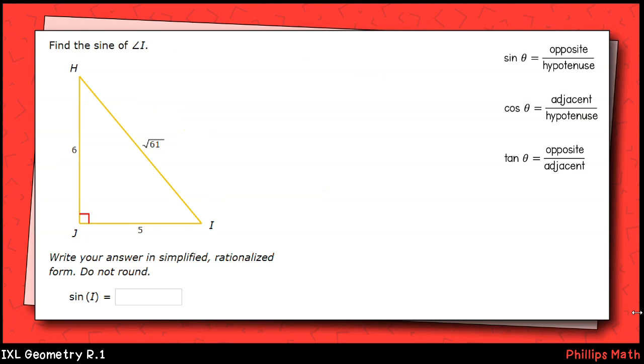The next one asks for the sine of angle I. Again, the sine of an angle is the ratio between the side opposite that angle and the hypotenuse of the triangle. For angle I, that's going to be 6 over the square root of 61. Now we need to simplify this a little bit further because IXL asks specifically for a fraction in rationalized form. That means no radical in the denominator.